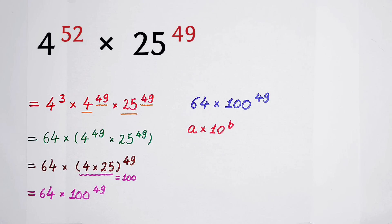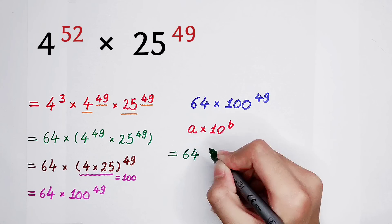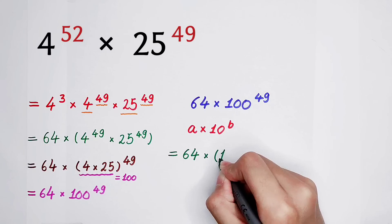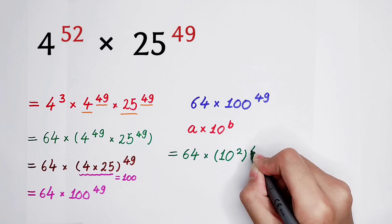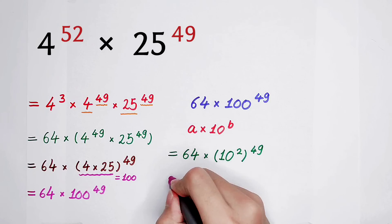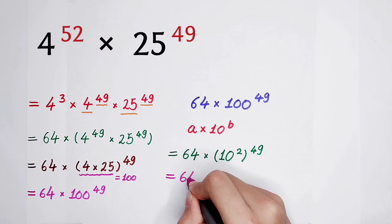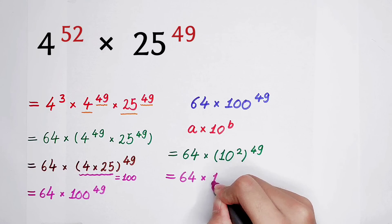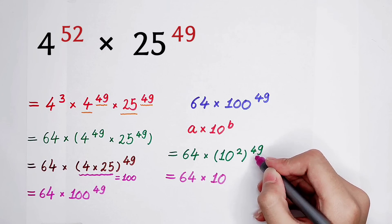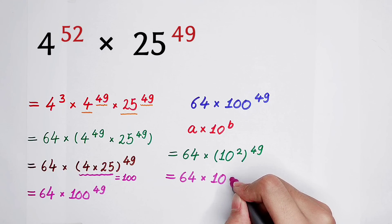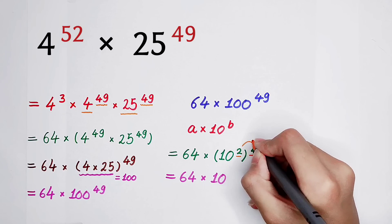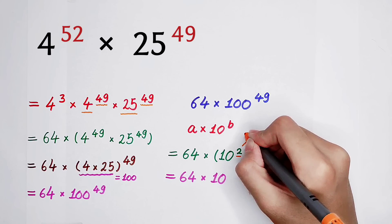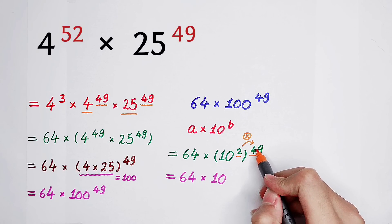We know that 64, then times 100 is 10 squared, and then here, the exponent 49. Now, 10 squared to the power of 49, you just get the multiplications of the exponent, and it becomes the new exponent. 2, then times 49. 2 times 49. It is 98.